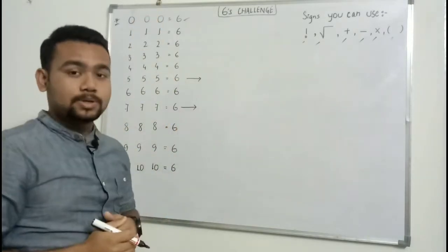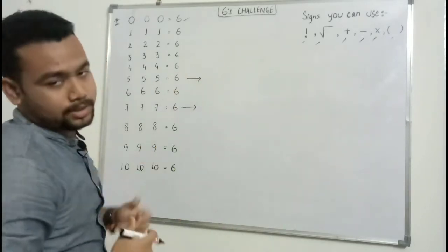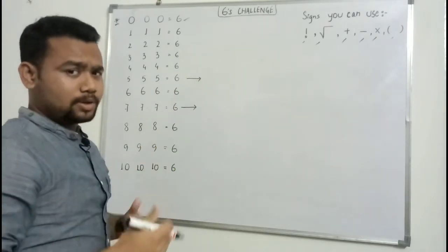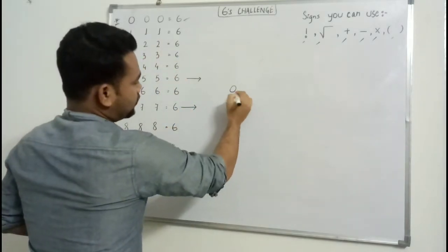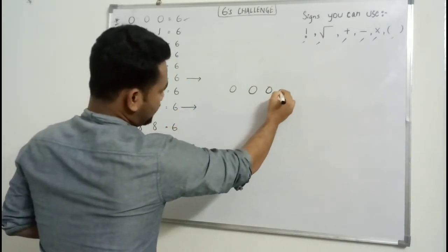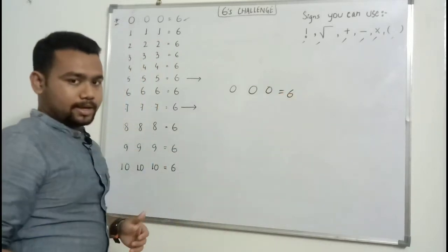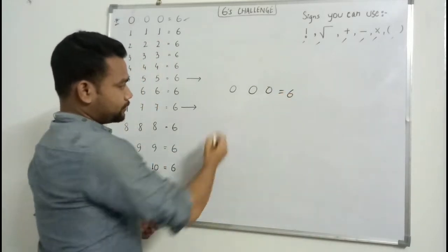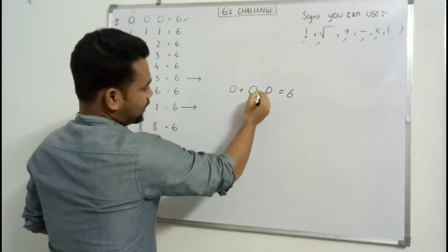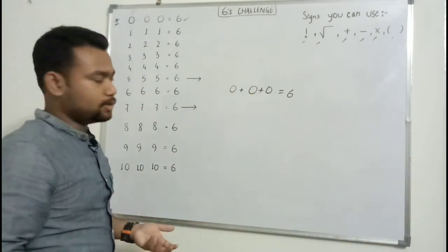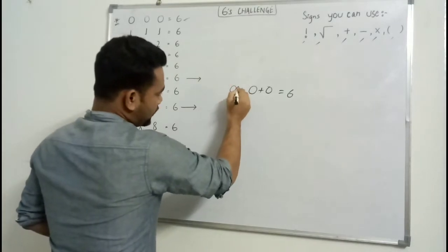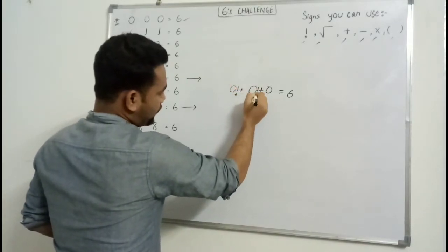So a block challenge here. I'm giving you an example - suppose you have zero zero zero equal to six. Earlier zero plus zero plus zero gives us zero. I'll do one thing, I'll put two factorial signs.